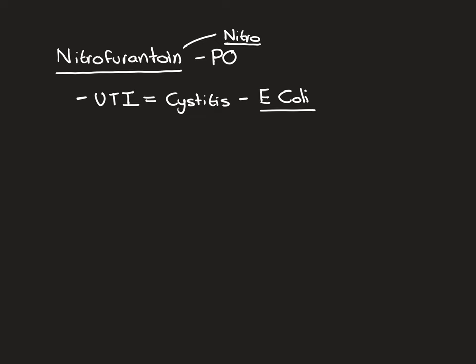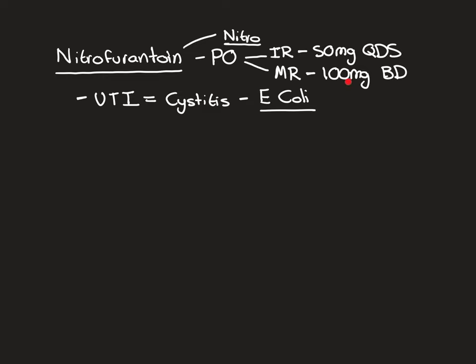Let's talk about dose. There are two different types of tablet or capsule. There's an immediate release formulation and a modified release formulation. If you give the immediate release type, the dose is 50mg four times a day. Whereas if you take the modified release type, the frequency goes down to twice daily, and the dose is doubled — so you take 100mg twice daily.